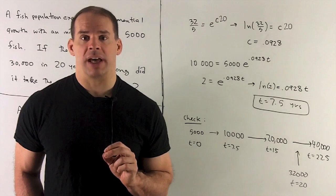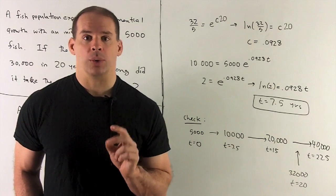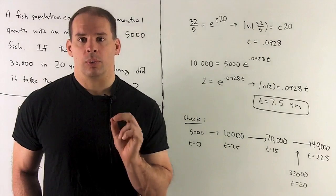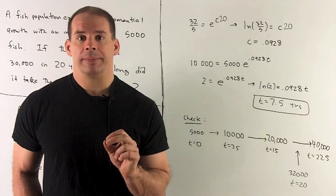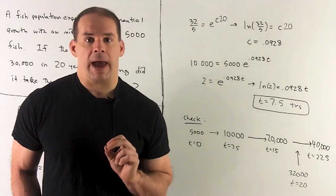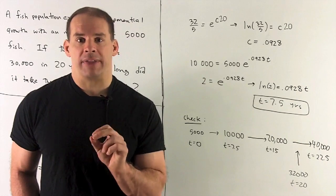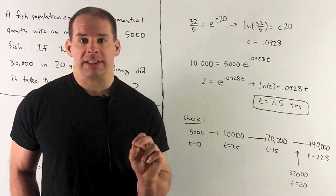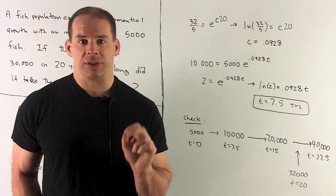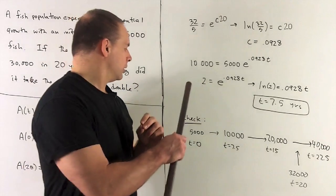So now I can find our doubling time. So what do we do? Well, what do we know? We want to know when we double the initial amount. So if we start off with 5,000, when one doubling time passes, we'll have 10,000 fish right here.